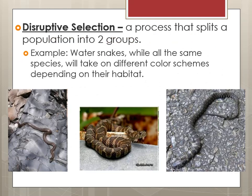Another type is disruptive selection, which is a process that splits a population into two groups. The best example is water snakes — you might think each one is a different species, but they're actually the same species. Because of regional differences in environment, they have different color patterns. We see this for many species: one may be the eastern variety, one the southern variety, one the northern variety, with the only difference being a slight variation in color schemes. This applies to snakes as well as various species of birds.